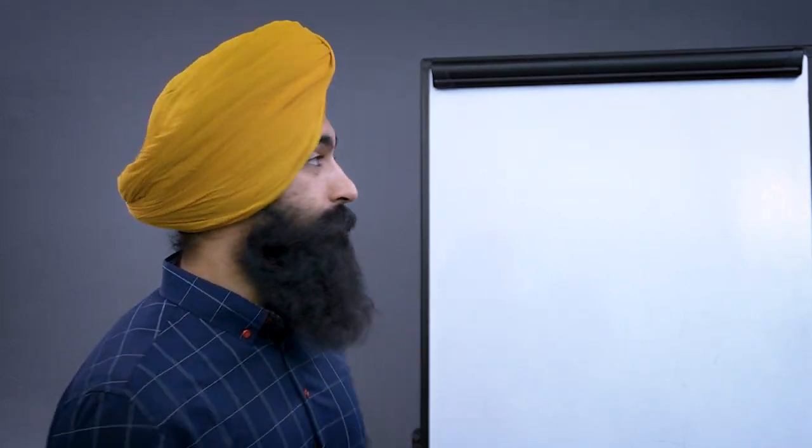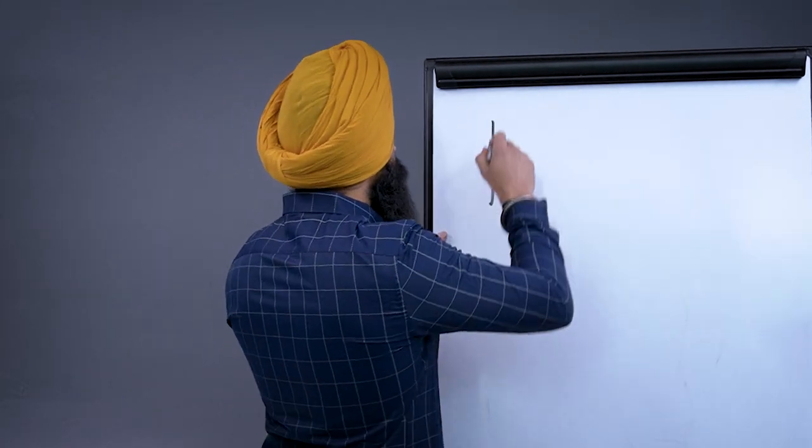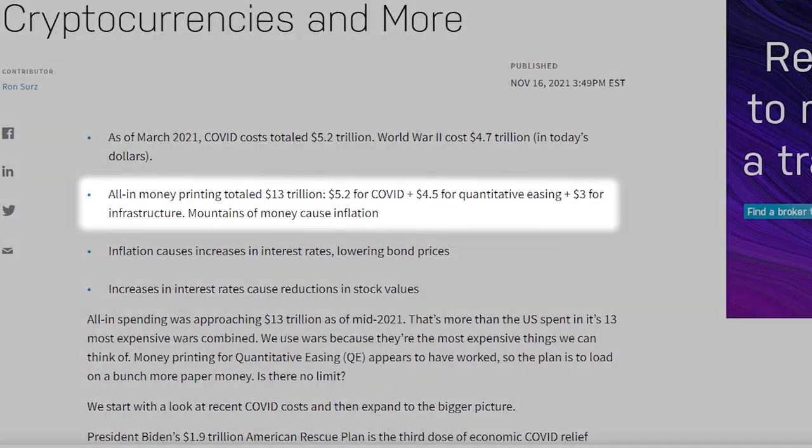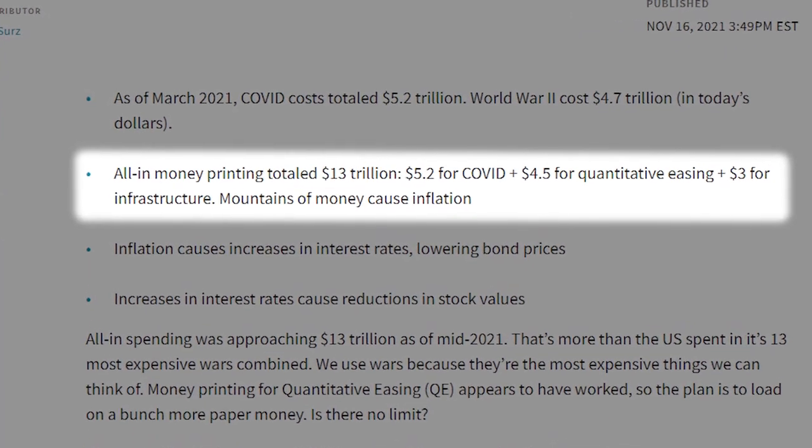The reason why we're seeing such high inflation is because in 2020 and 2021 we printed 13 trillion dollars in pandemic relief, quantitative easing, and infrastructure money. And now we're paying the price for all this money printing.